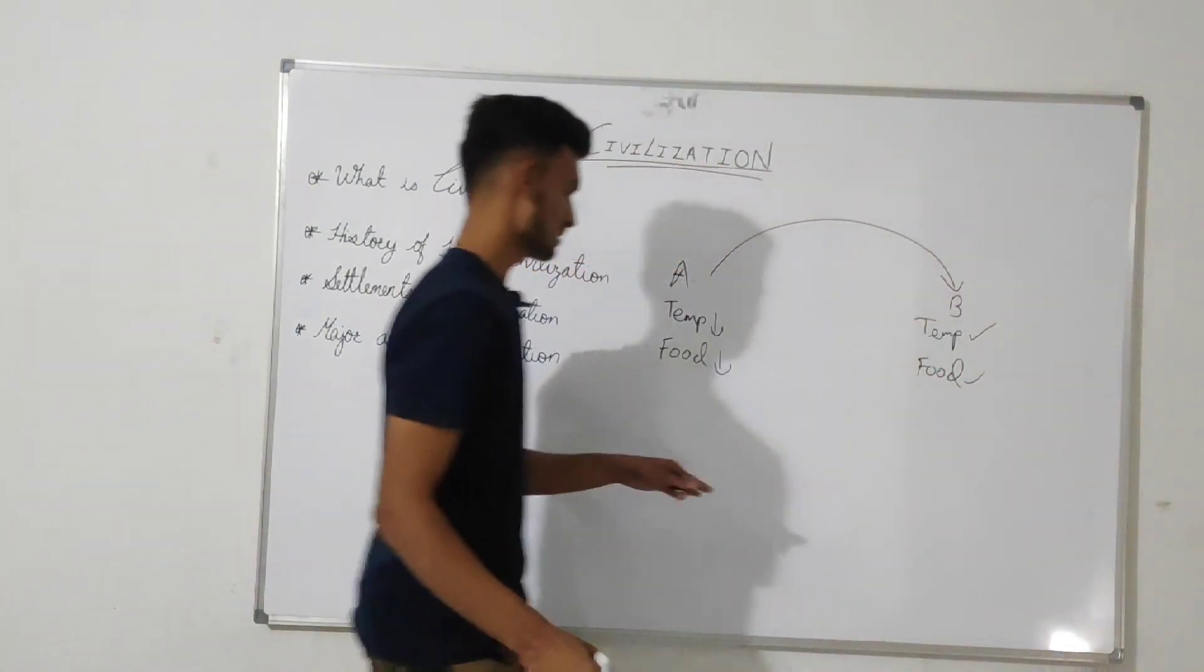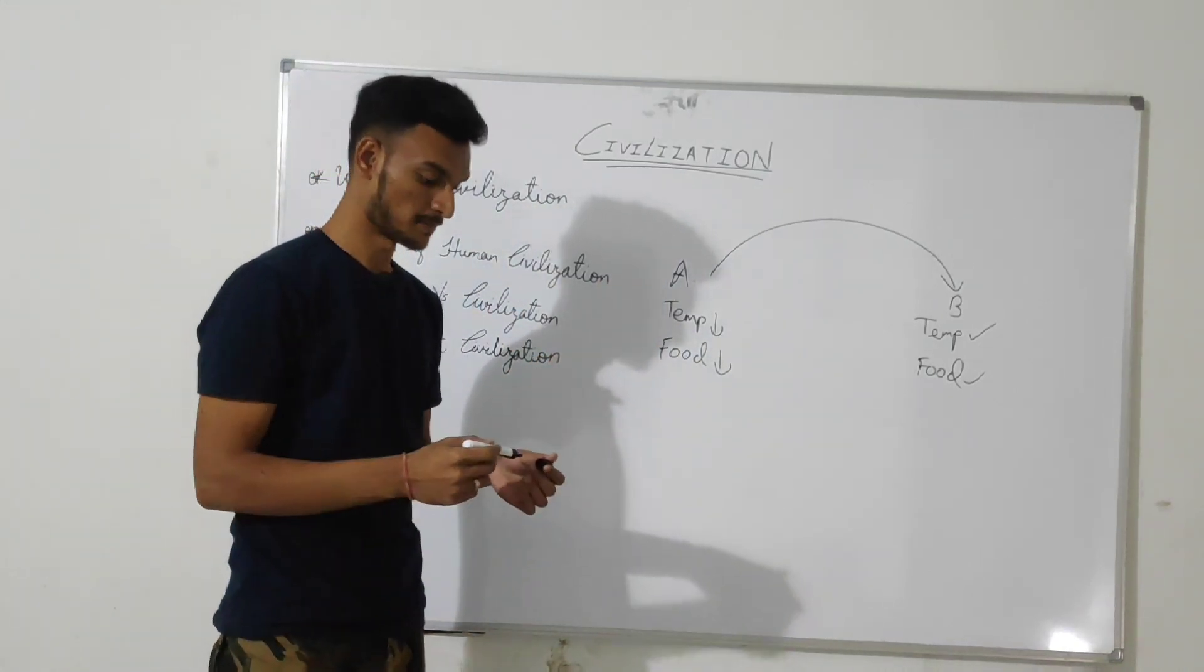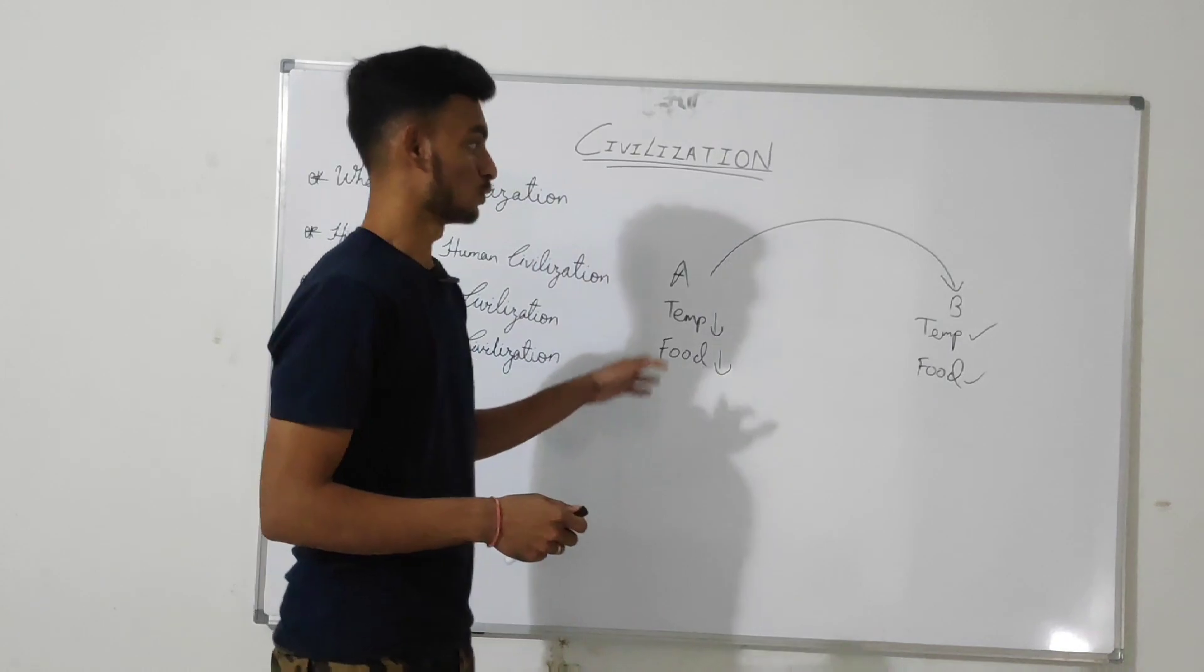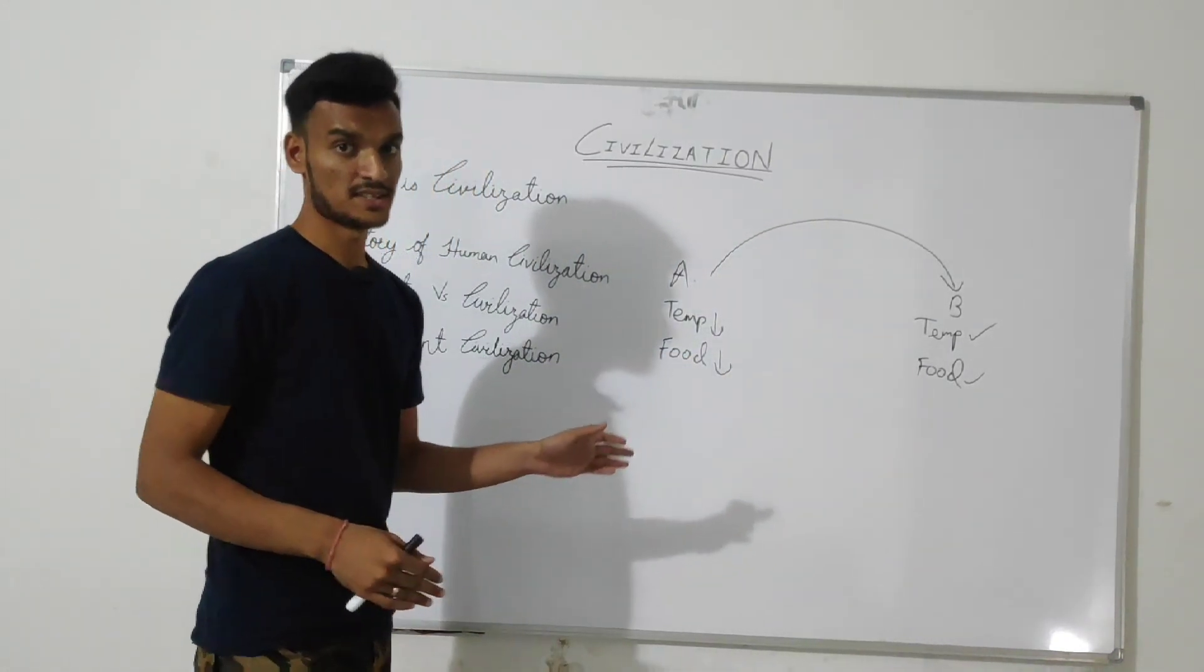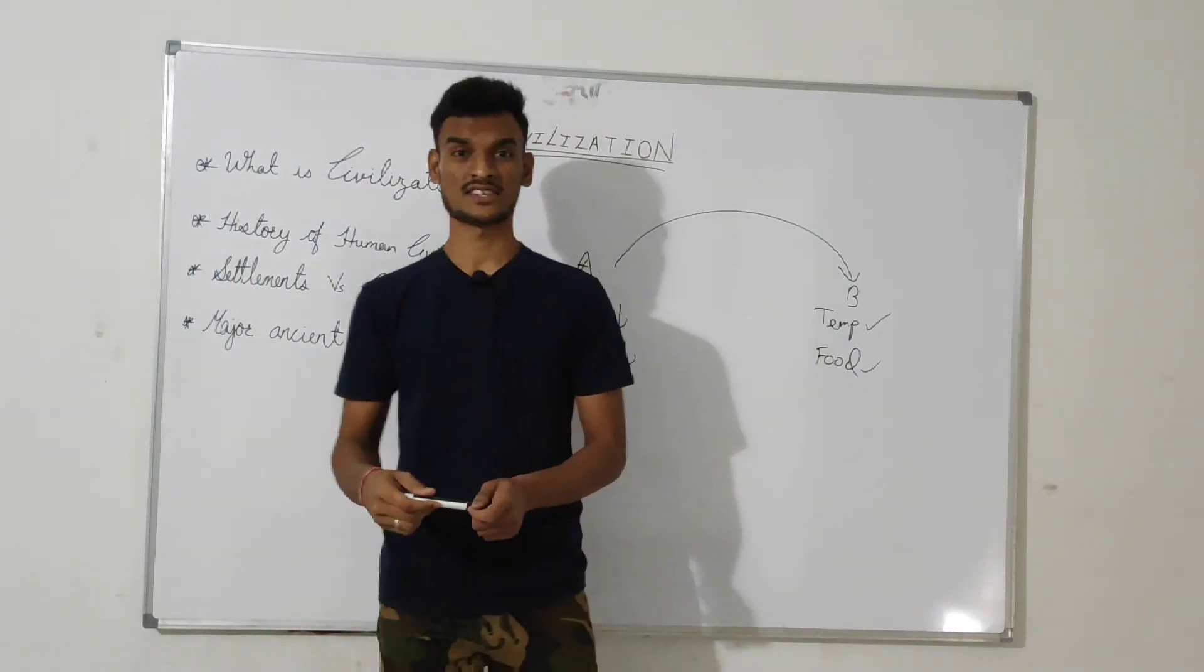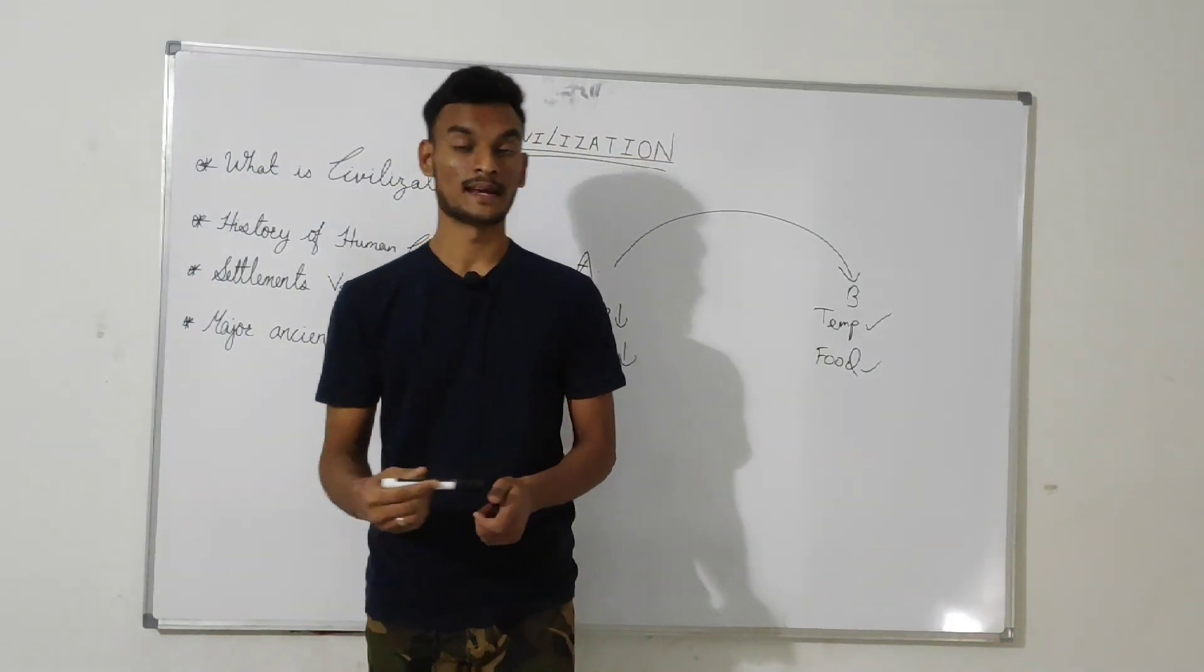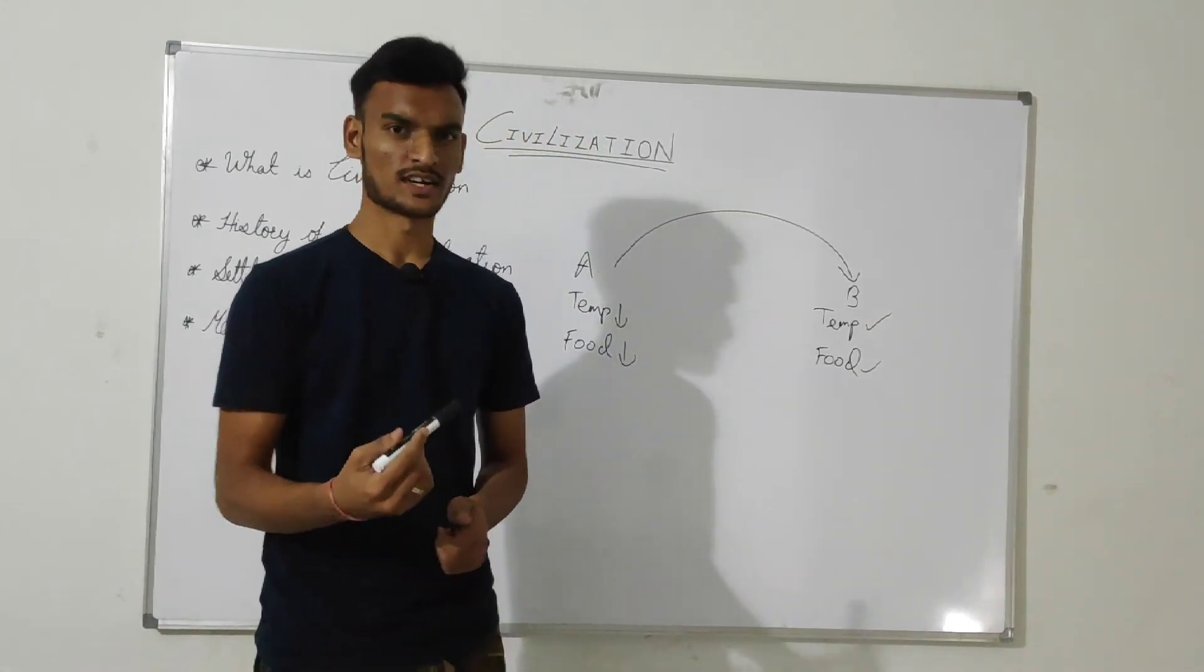These were just two of the many conditions that lead to the nomadic nature of humans. But this nomadic lifestyle changed after the last ice age on earth was over. By the end of the last glacial maximum, humanity settled into more permanent settlements, mostly around river banks.